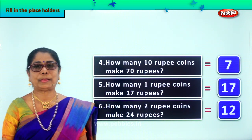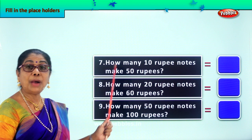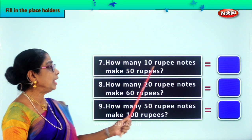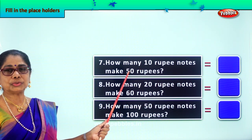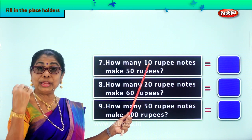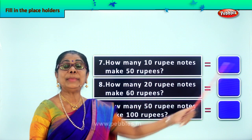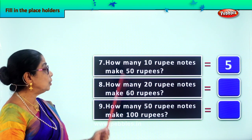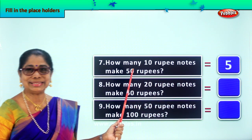Let's take another set of sums. Let's read together before filling in. How many 10-rupee coins? What's the color of the 10-rupee coins? Brown. How many 10-rupee coins make 50 rupees? 10 goes into 50 — how many times? 5. So we need 1, 2, 3, 4, 5 ten-rupee coins. We need 5 ten-rupee coins to make 50 rupees.